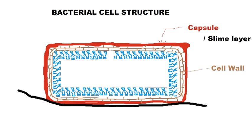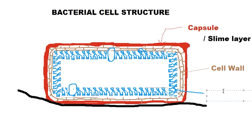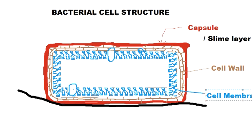The membrane is traversed by structural proteins at some places — there are membrane proteins present at various points. This blue structure is called the cell membrane. So far, the bacteria possess a capsule as the outermost layer (which may also be the slime layer), then the cell wall, then the cell membrane.